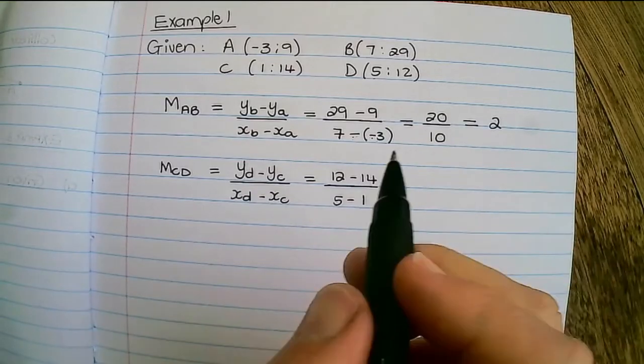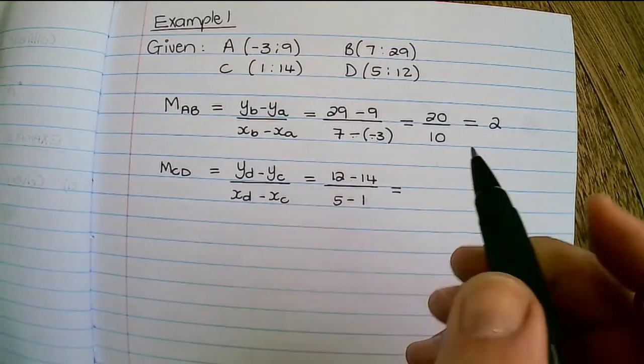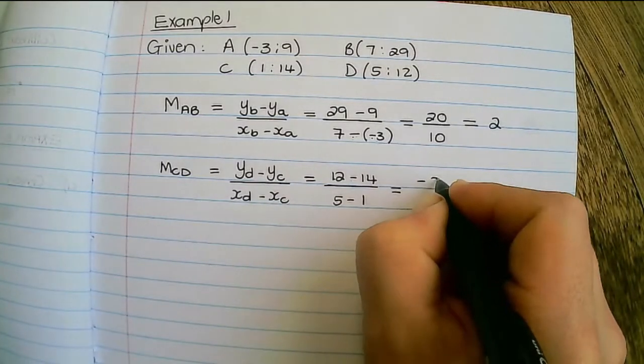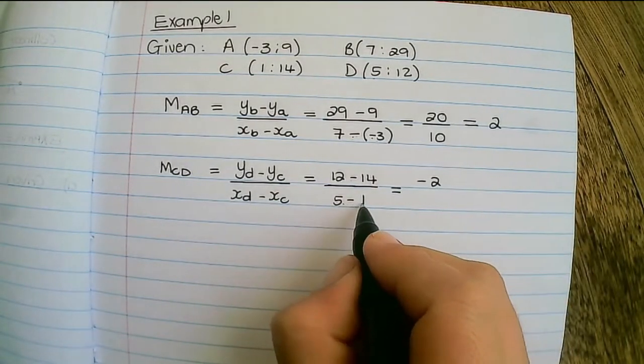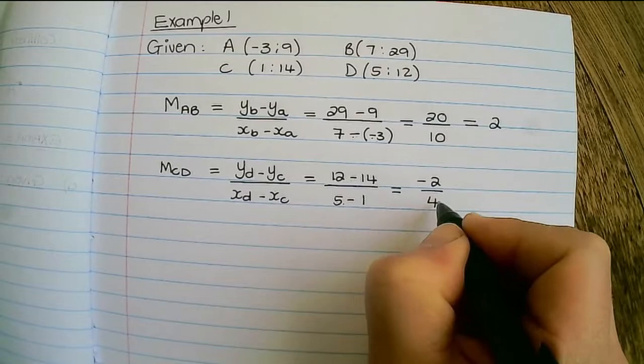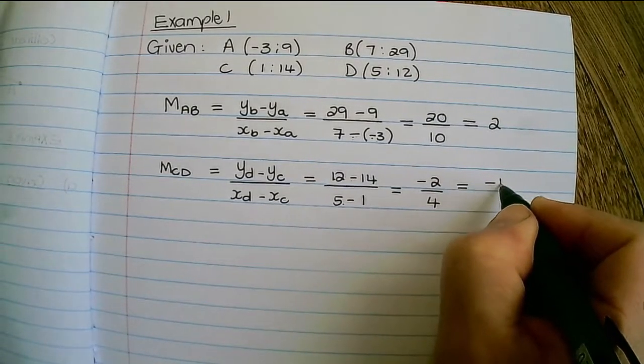And if I simplify, 12 minus 14 is negative 2. 5 minus 1 equals 4. And if I simplify that's negative 1 half.